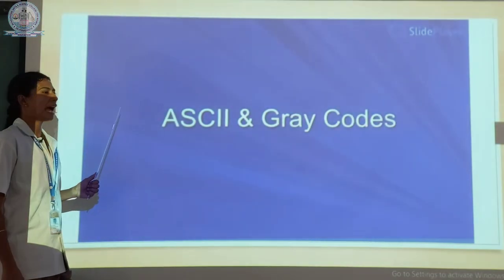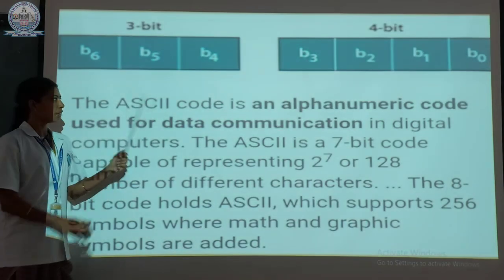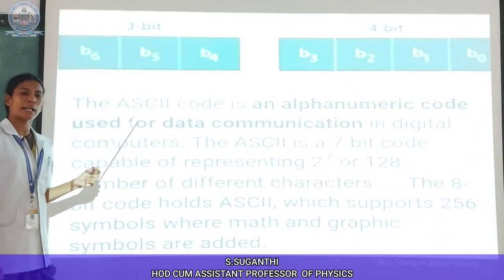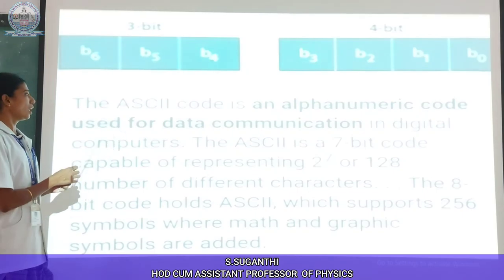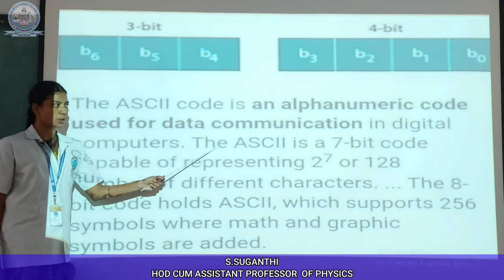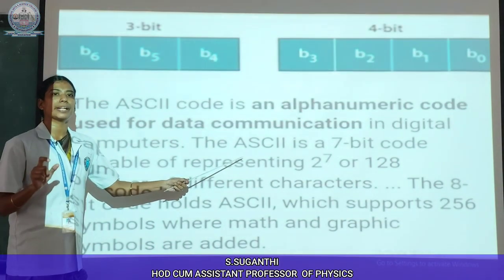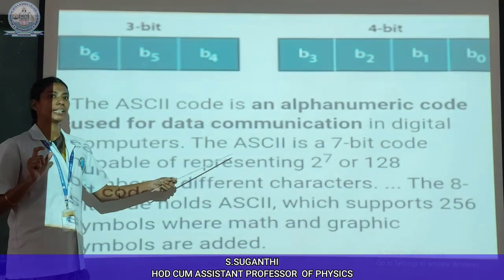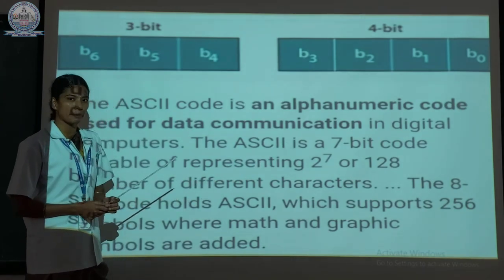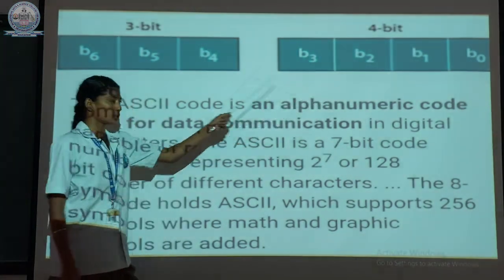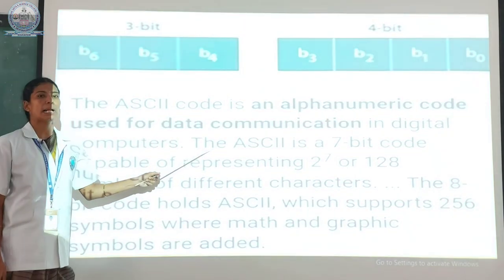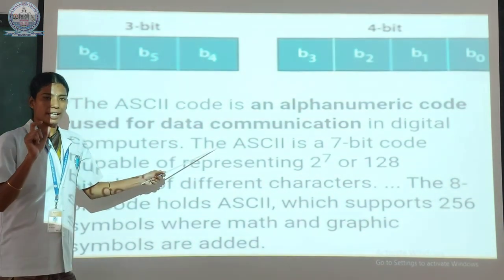The next slide is ASCII and Gray codes. The ASCII code is an alphanumeric code. It refers to letters, numbers, and symbols. The ASCII code is used for data communication in digital computers. ASCII stands for American Standard Code for Information Interchange. The ASCII code is a 7-bit code, meaning it represents bits B0 to B6. That is a 7-bit code.